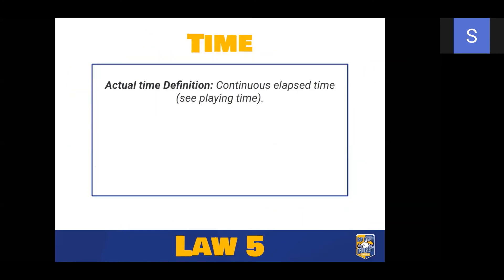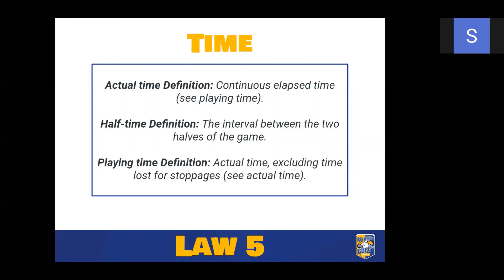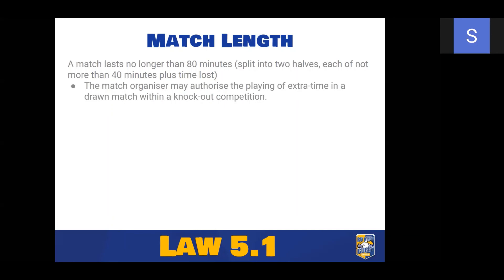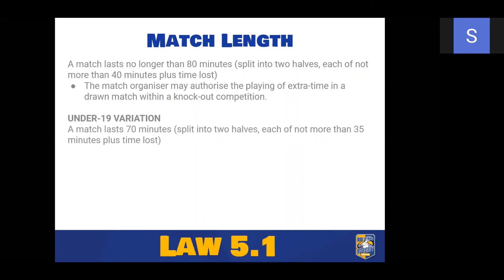Law five: time. Actual time is continuous elapsed time. Playing time is actual time excluding time lost for stoppages. Half-time is the interval between the two halves. A match lasts no longer than 80 minutes, split into two halves of no more than 40 minutes each plus time loss. Match organisers may authorise extra time for knockout competitions, semis or finals. Time loss from stoppages is added to that half, not at the end of the game.